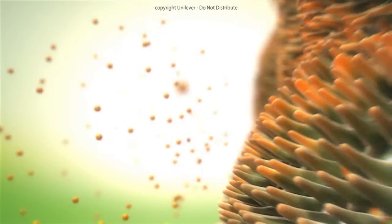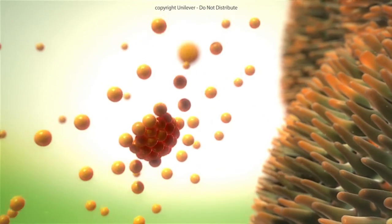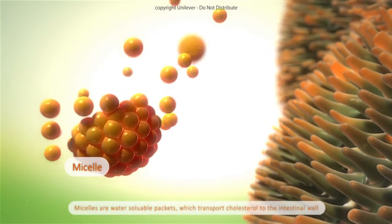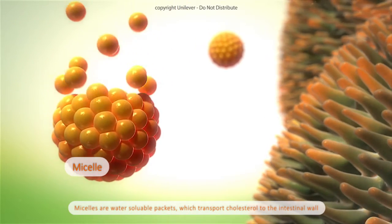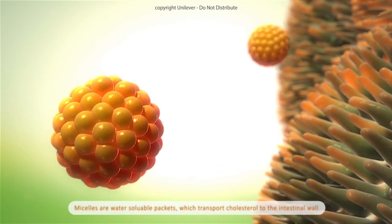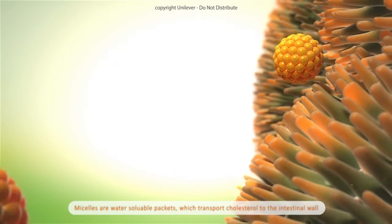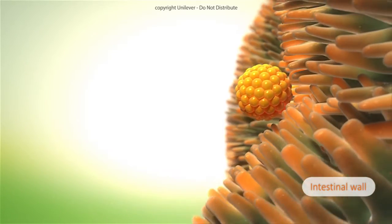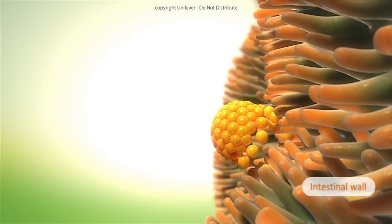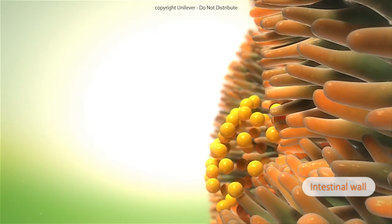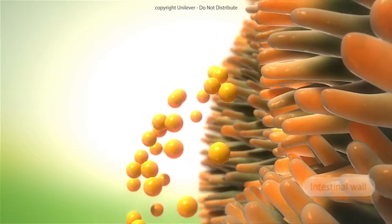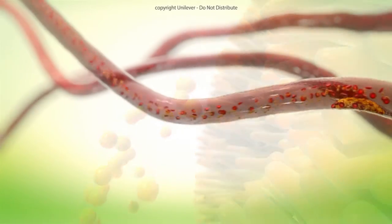In the gut, cholesterol in the form of lipid emulsions forms micelles to transport cholesterol to the surface of the intestinal wall. When micelles come into contact with the intestinal wall, cholesterol and other components are released. This enables the absorption of around 50% of cholesterol into the intestinal cells. Cholesterol then enters the bloodstream.